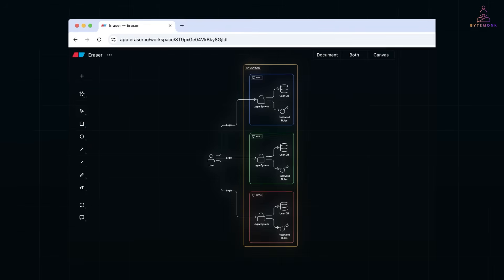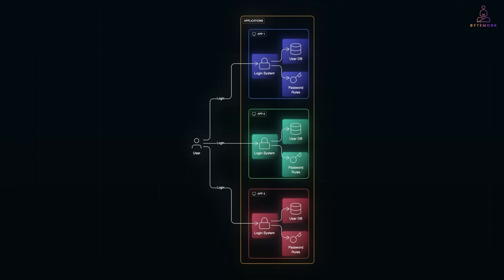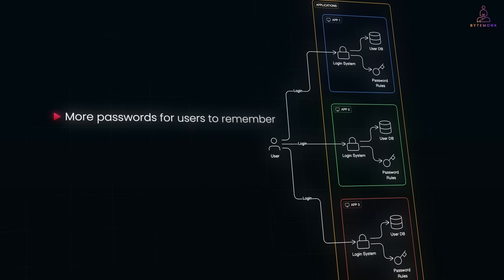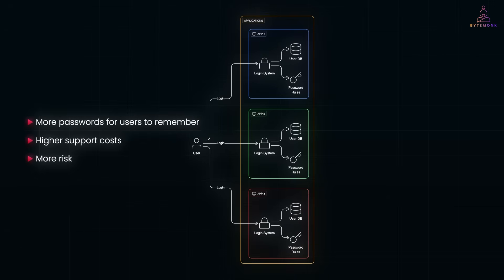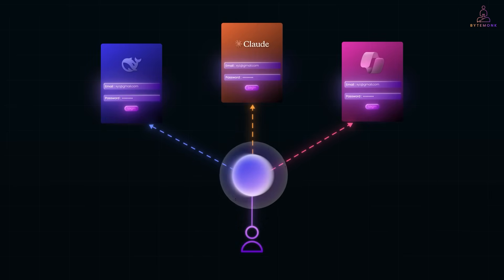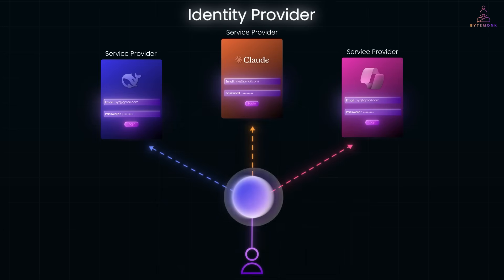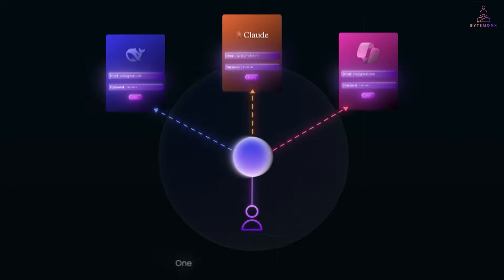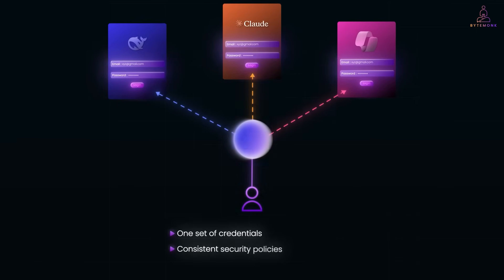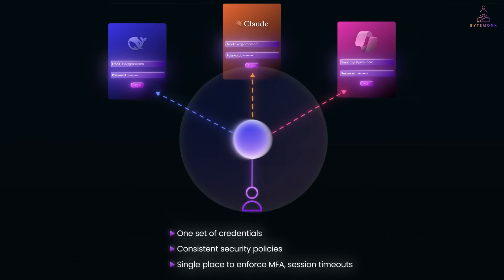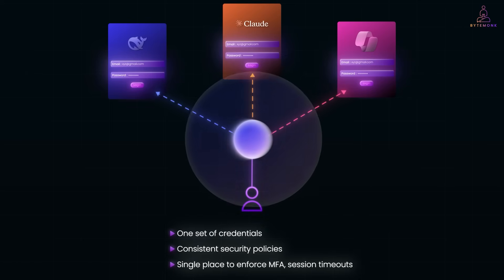Before SSO, each app had its own login system, database, and password rules. That meant more passwords for users to remember, higher support costs for password resets, and more risk if one app's login system got compromised. SSO centralizes authentication. You log into a trusted identity provider once, and all other apps — called service providers — trust that login. The result: one set of credentials, consistent security policies, and a single place to enforce MFA, session timeouts, or device checks. The catch? SSO isn't one single technology — there are different protocols for different needs.